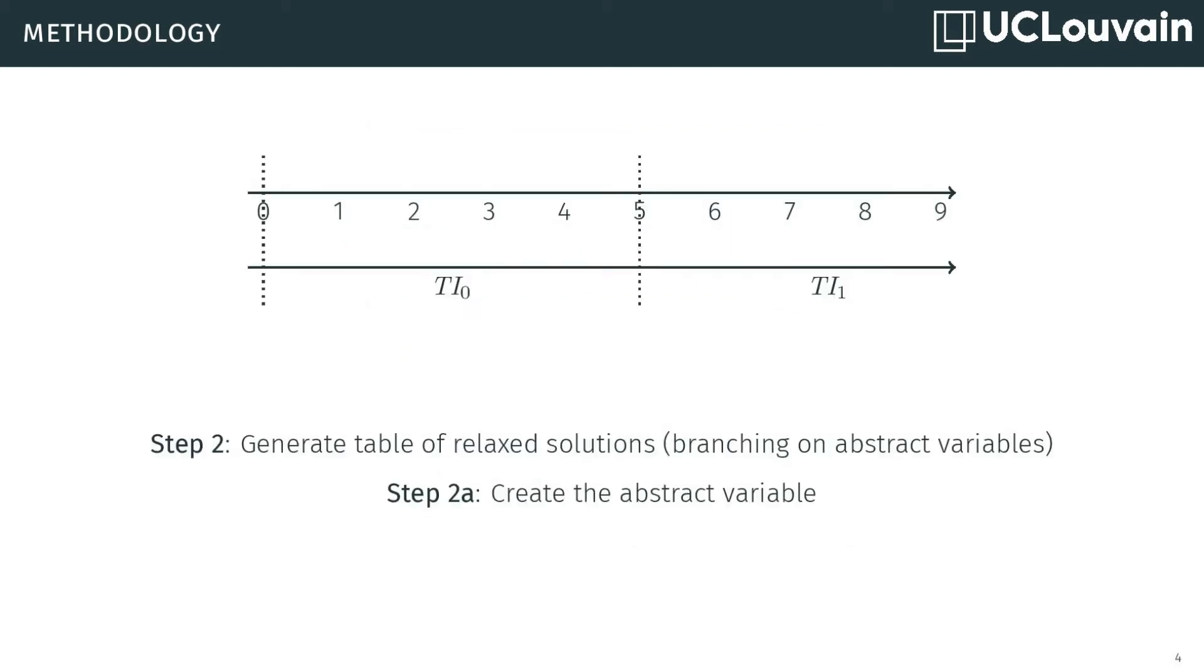The second step is twofold. The first part consists of creating our abstract variables. The idea behind is to have a more zoom out view of the problem by reducing the granularity of time. Instead of considering a time step of one hour, the time step could be one day or one week. In our example, we divided the 9 time intervals into two bigger time intervals. By adding these variables, the start of the task will now be scheduled during one of those time intervals.